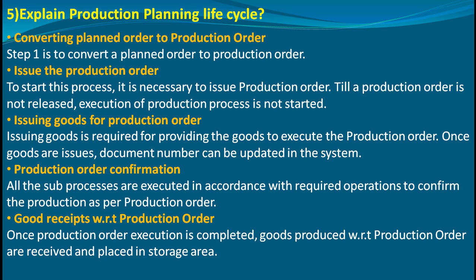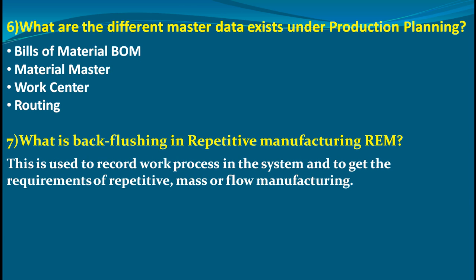The different master data that exists under production planning includes Bill of Materials (BOM), material master, work center, and routing. Regarding back flushing in repetitive manufacturing (REM), it is used to record the work process in the system and to capture the requirements of repetitive mass or flow manufacturing — essentially recording requirements of a repetitive nature or high-quantity mass manufacturing.